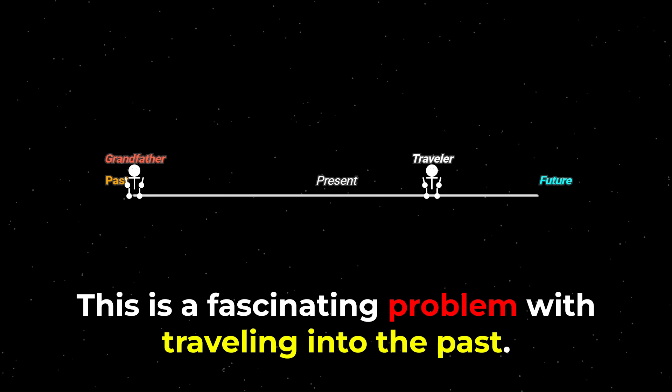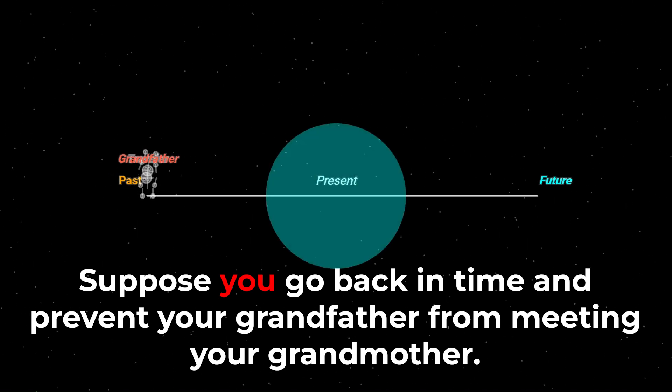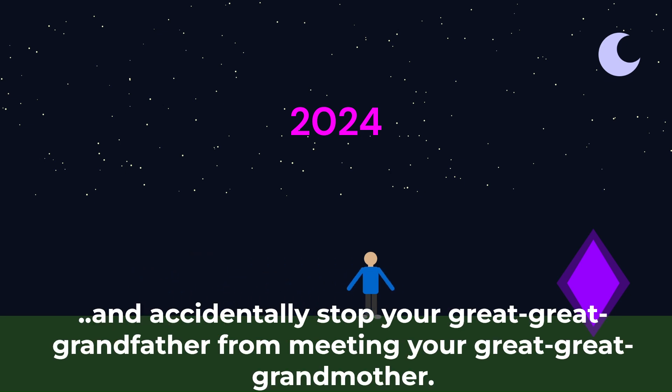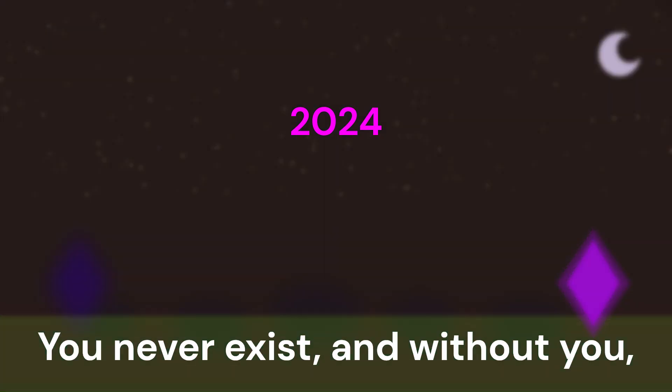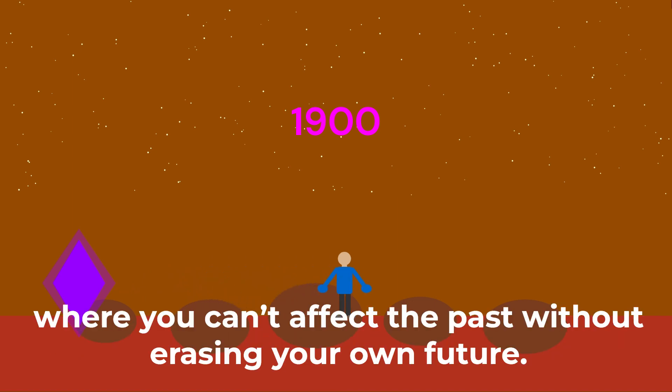Now let's dive into the grandfather paradox. This is a fascinating problem with traveling into the past. Suppose you go back in time and prevent your grandfather from meeting your grandmother. Would you even exist to travel back in the first place? Imagine this. You go back to ancient time and accidentally stop your great-great-grandfather from meeting your great-great-grandmother. You never exist, and without you, who would have gone back in time in the first place? It's a mind-bending paradox where you can't affect the past without erasing your own future.